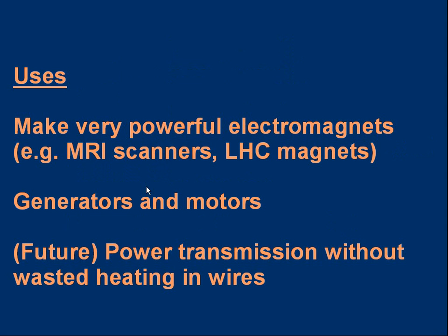Let's go through a few uses. Because of the zero resistance, we can make very powerful electromagnets — a coil of superconducting wire carrying a large current generates very large magnetic fields. These are needed in things like MRI scanners used in hospitals, and the LHC — the Large Hadron Collider at CERN in Switzerland — a particle accelerator that uses superconducting magnets to control the particle beams. You can also get generators and motors that use superconducting coils, and they're much more efficient than conventional motors and generators. In the future, it might be possible to have power transmission without wasting heat — a huge amount of energy is currently wasted heating up the wires in the national grid, and superconducting methods might eliminate that.